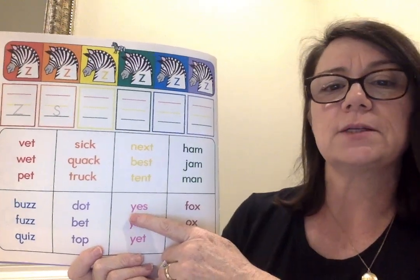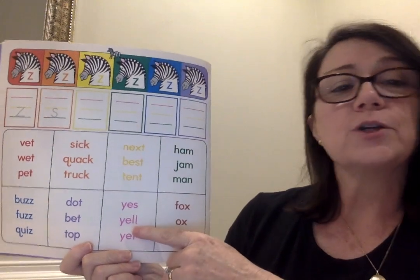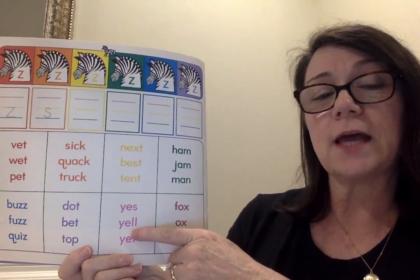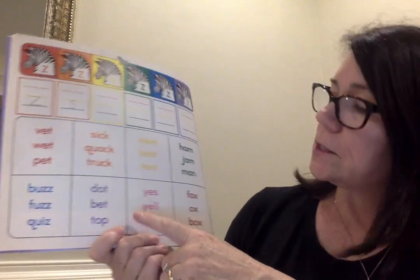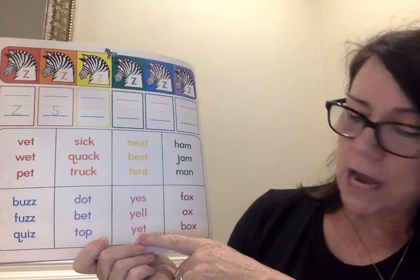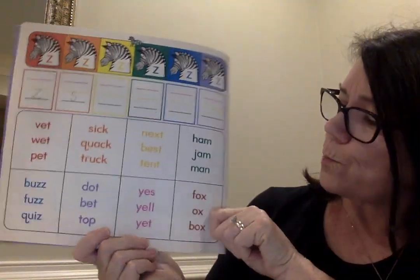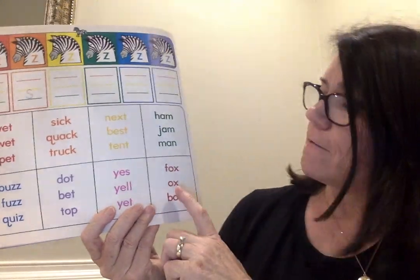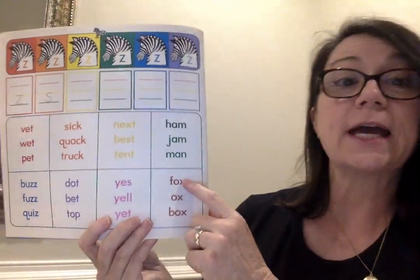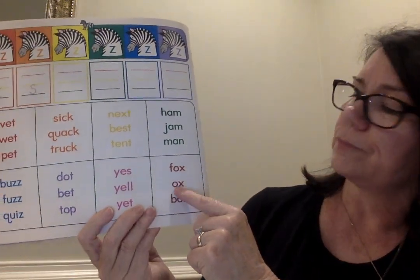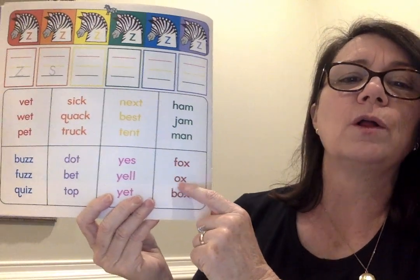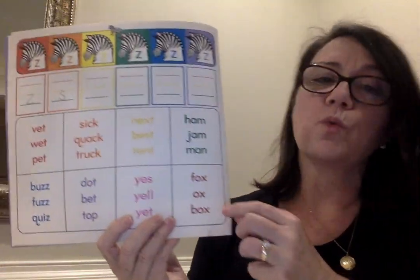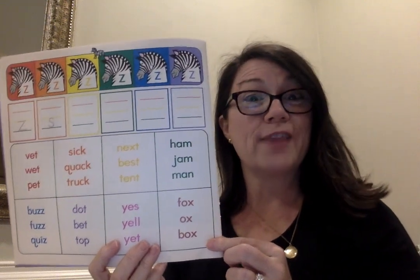Let's move over to our pink words. The first word is yes — remember when we were doing yes and no the other day. Next one is yell — there's the FLSZ rule: F, L, S, and Z double after a short vowel. That's why we have two L's: yell. Last one is yet. So we have yes, yell, and yet — I want you to circle the word yes. Last one: brown words. The first one is fox — remember X says X sound. Next word is ox, and the last one is box. I want you to circle the word box. Once you've done that, give yourself a check and have a great afternoon. I'll see you tomorrow.